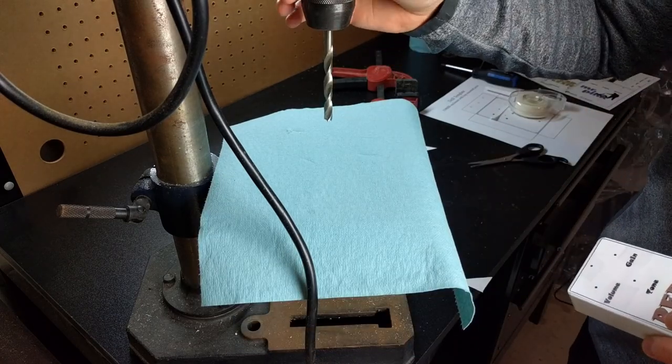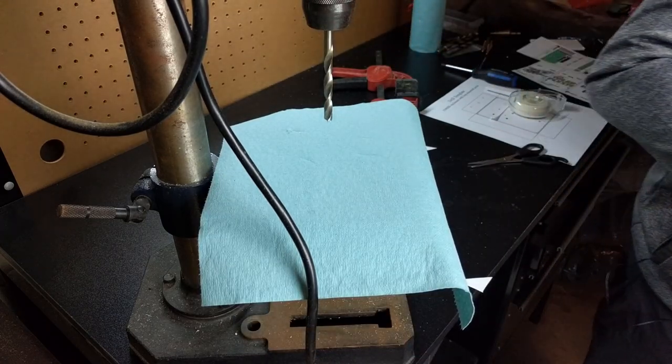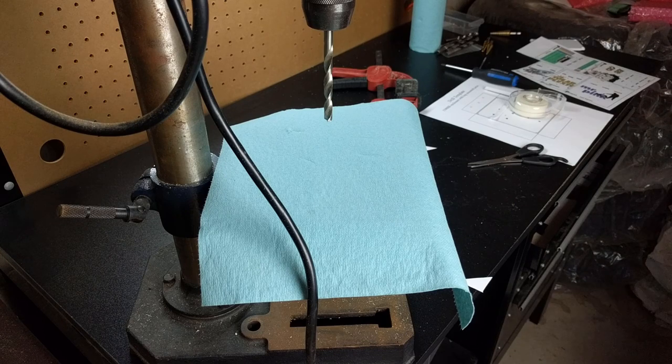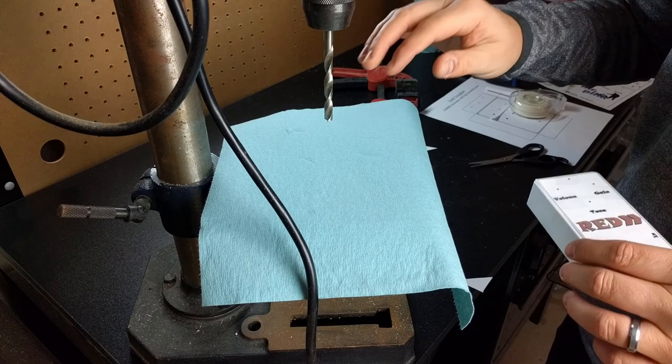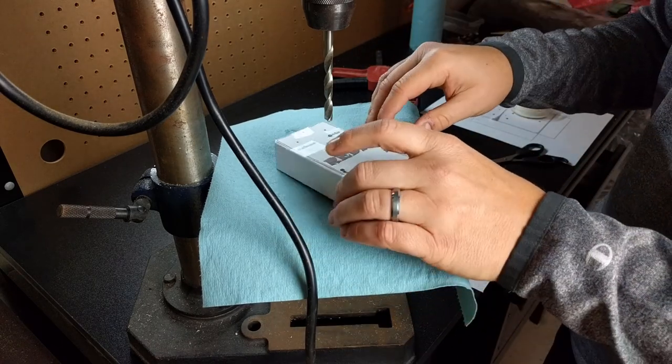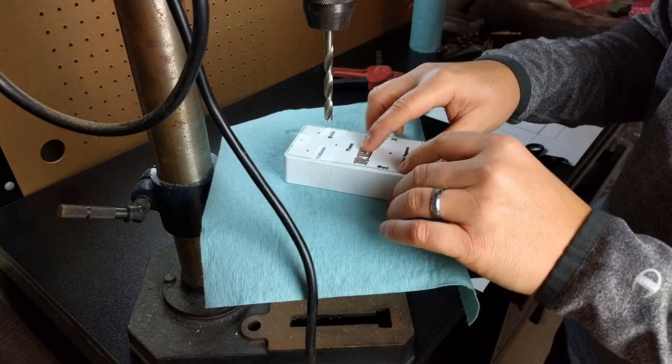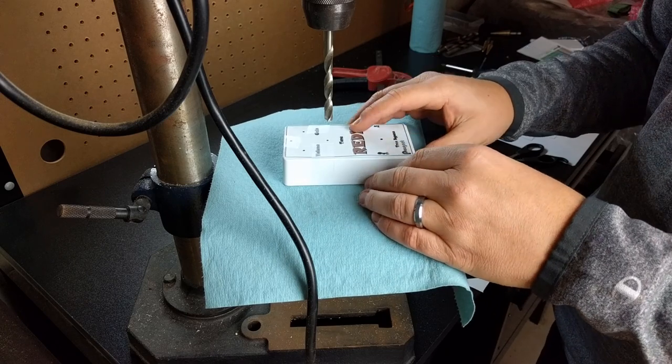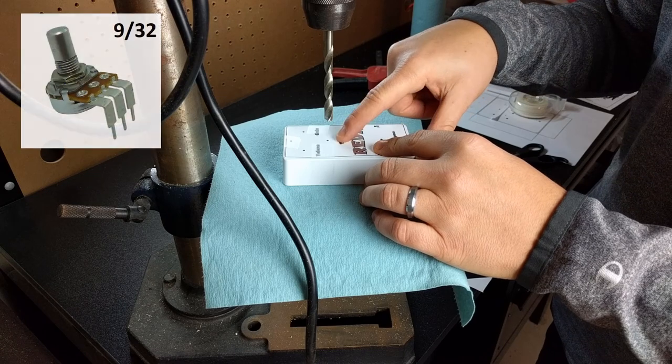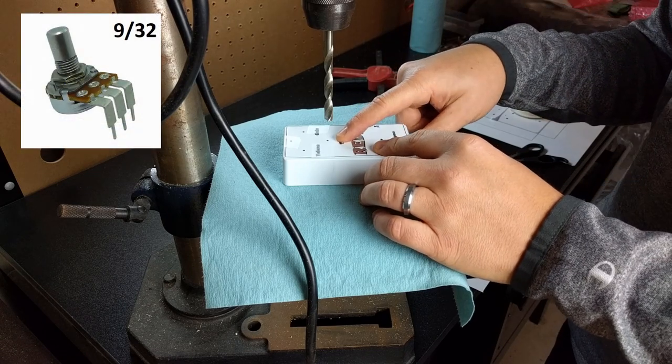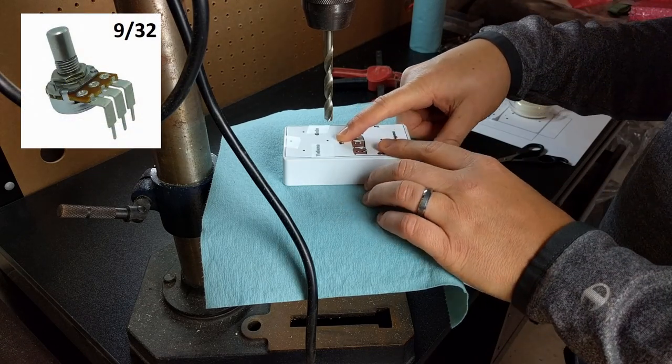So now we have our template on top. I've already fed my drill press with my, I believe it's my 9/32 bit, which is used for potentiometers. I'll go through just quickly the other common sizes for components that you're going to be drilling out.